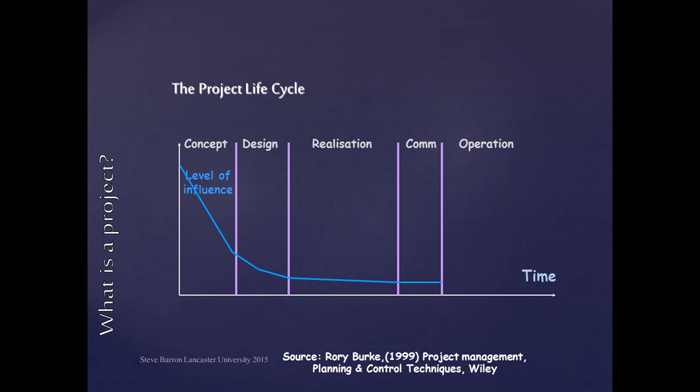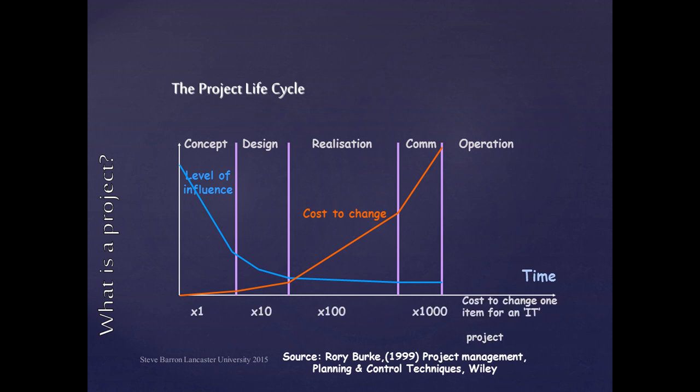In relation to the decreasing ability to make changes to a project, the cost of making changes increases significantly as the project progresses. Burke suggests that for a software project these costs can be increased by a factor of 10 as the project proceeds through these phases.